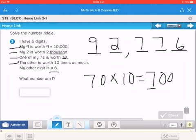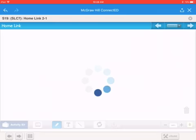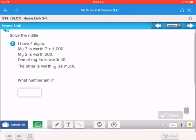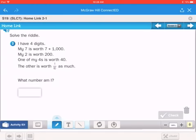The other 7 is worth 10 times as much. So 70 times 10 is 700. So my other 7 goes in the 100s place. And the last digit is a 6. So you would get 92,776. That's number 2. Your next question, it says, I have four digits.